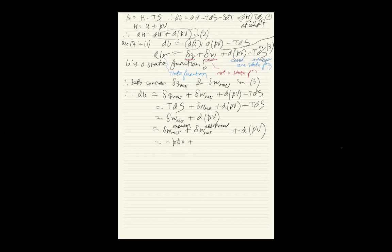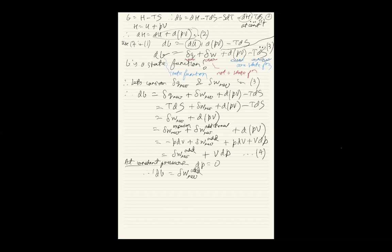We split δw_reversible into expansion work, which is -PdV, plus δw_reversible_additional. And d(PV) = PdV + VdP. So dG = -PdV + δw_add + PdV + VdP. The PdV terms cancel, leaving dG = δw_add + VdP. Now we introduce the constant pressure condition: dP = 0, therefore dG = δw_reversible_additional. This is what we set out to show.